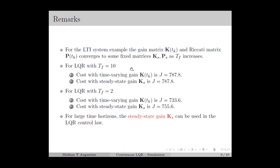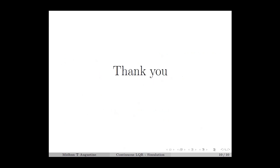In the case of tf equal to 10, during the transient period of the states the optimal feedback gain was constant. Therefore, replacing the optimal feedback gain with the steady-state gain matrix does not affect performance. In general, if the time horizon is sufficiently large, or in the case of infinite-horizon LQR, we can use the steady-state gain matrix ks in the LQR control law without affecting performance. In the next lecture we discuss the derivation of discrete-time LQR. That completes this lecture, thanks for listening.